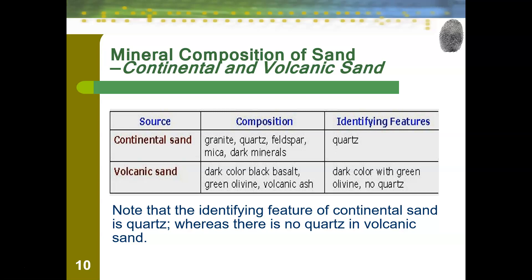Then there's volcanic sand — to have it, you need to be near a volcano or your location previously had an active volcano. Volcanic sand is known for being black; if you've heard of black sand beaches, it is caused either by a volcano or by dyed sand. It is known for its dark color, due to black basalt, green olivine, and volcanic ash. Its identifying features are its very dark color and that it contains no quartz — you will not find quartz in volcanic sand.